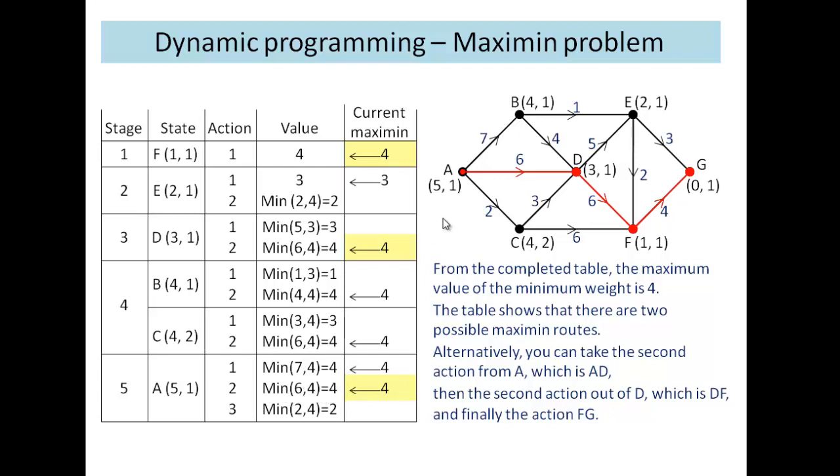We look at this one first. We can see we've taken action 2, which is this action here to D. From D we take action 2, which takes us to F, and then from F we have only one option, going straight to G. So we end up here with a maximin route of A, D, F, G.